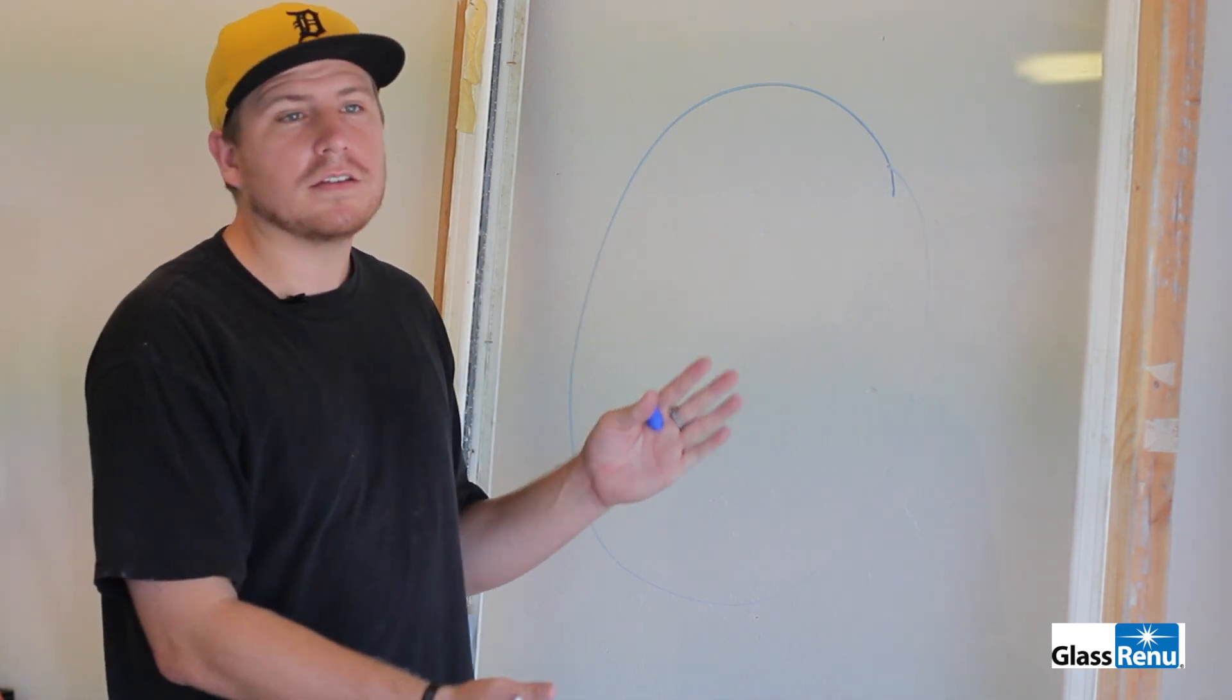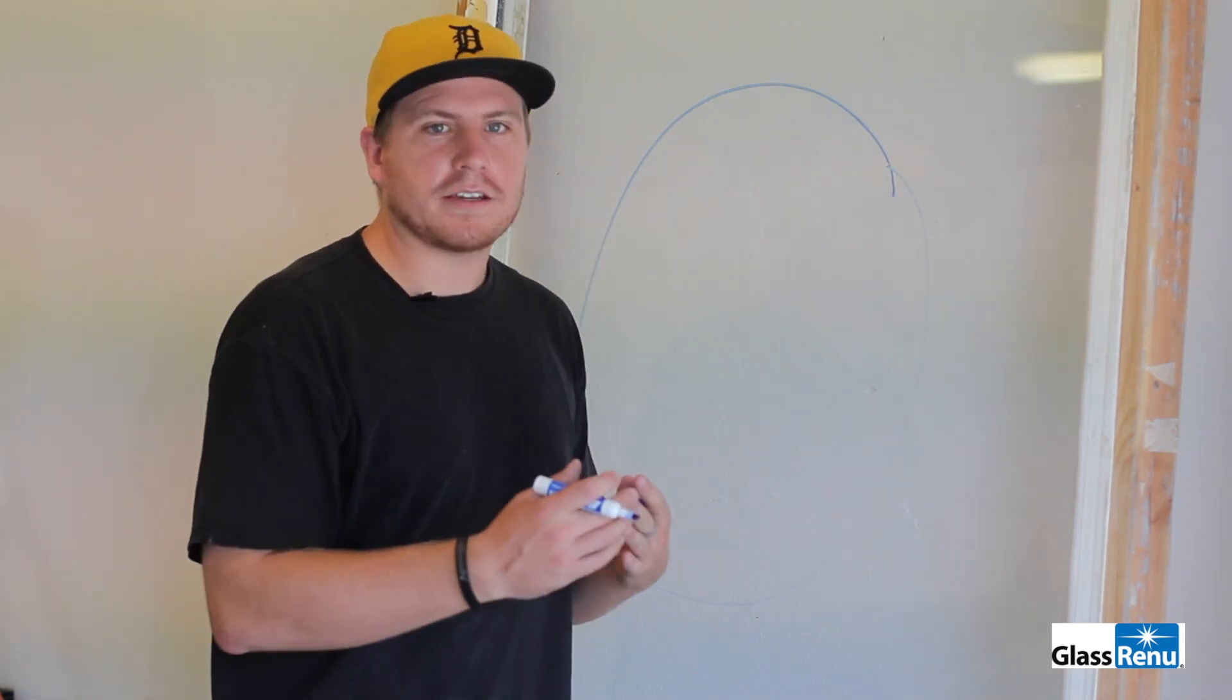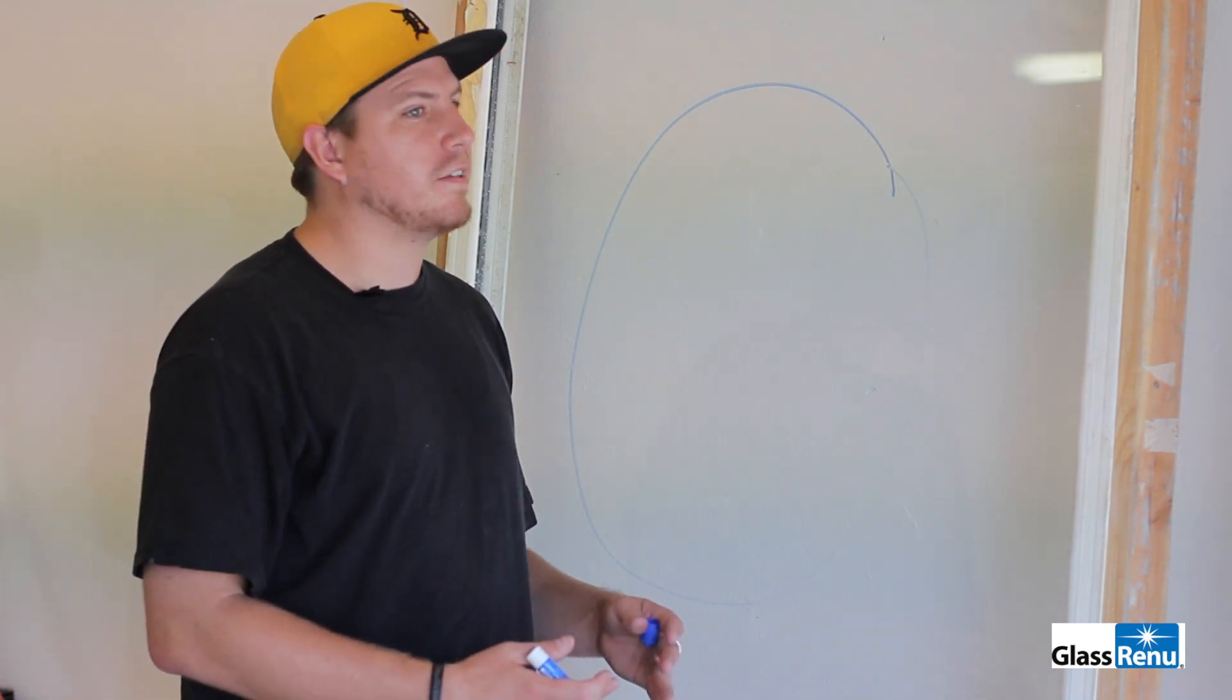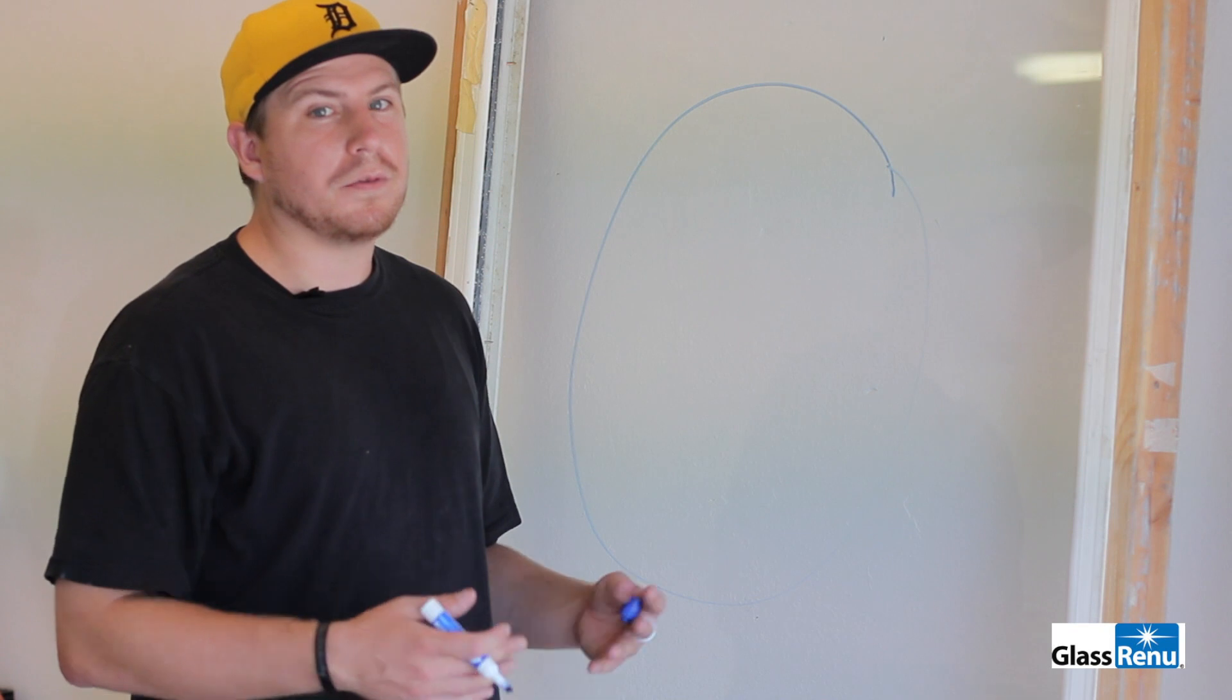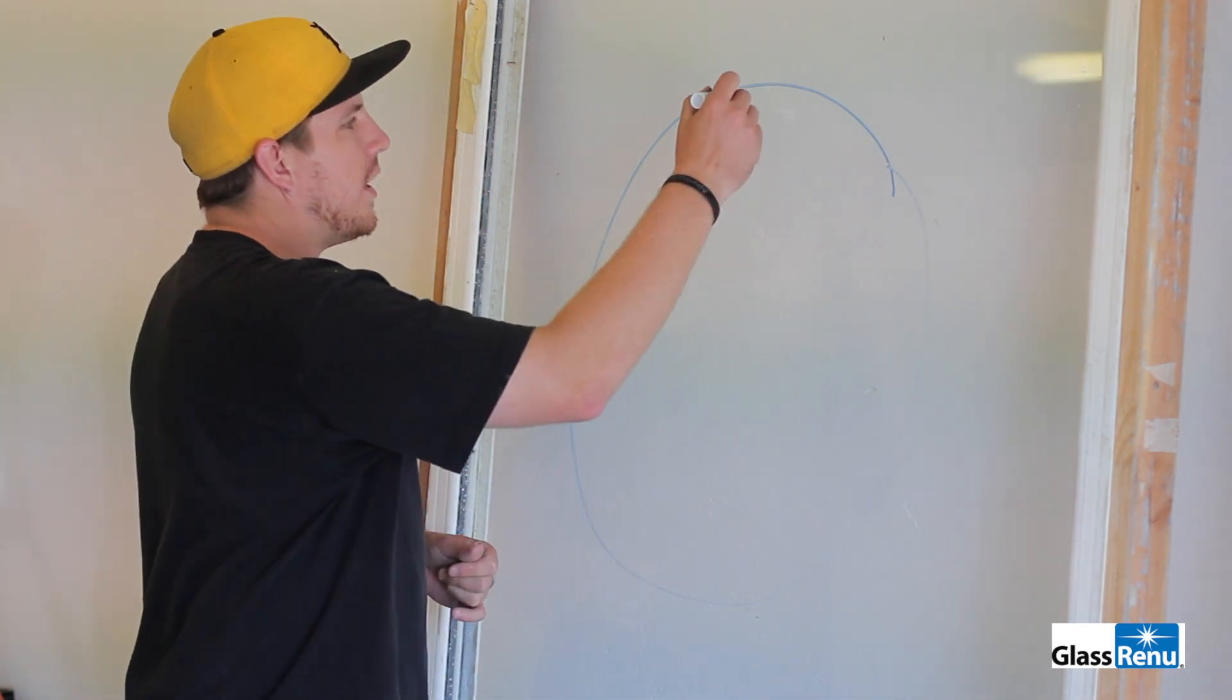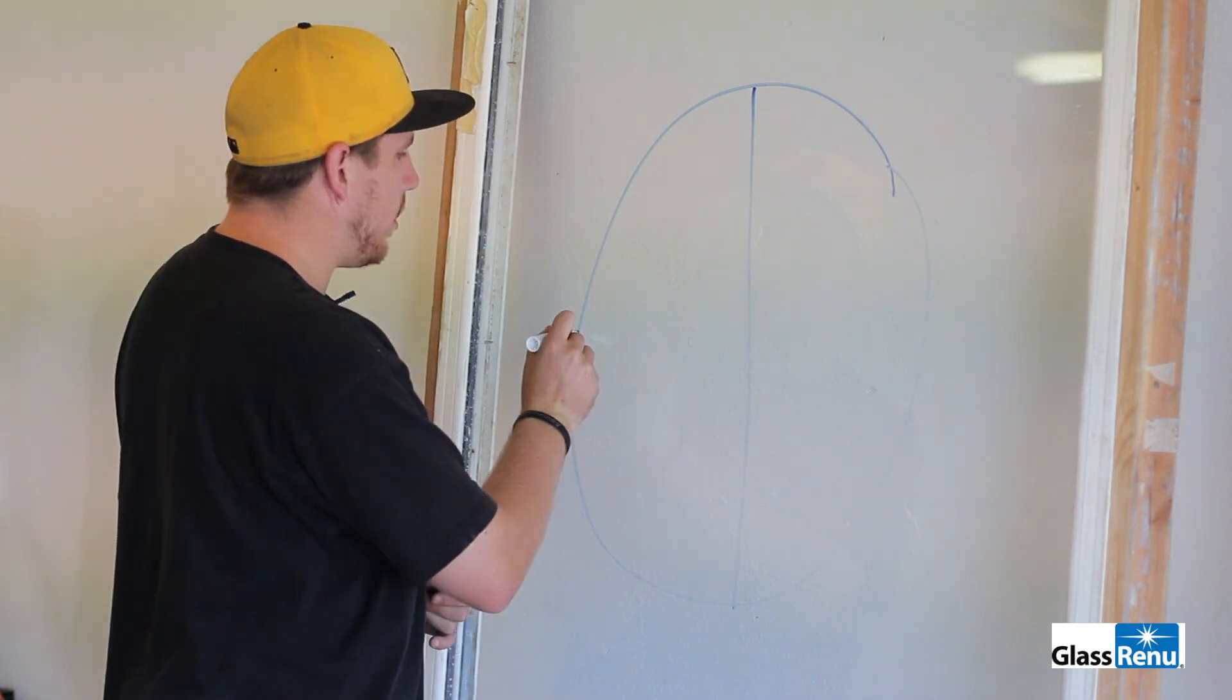If I do the entire piece, I will find myself guessing and checking, starting and stopping, wasting polish, cleaning a lot of polish off the glass, and sometimes it can be frustrating as well because it's just not polishing out fast enough. The better way to do it is to go ahead and section your area off.